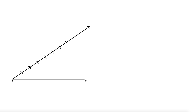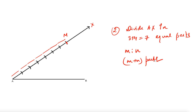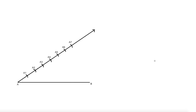Once I've marked 7 equal parts — 1, 2, 3, 4, 5, 6, 7 — I have seven divisions in line segment AM. So the second step is: divide AX into m+n equal parts (here 3+4=7). The third step is: name the points A1 to A7. It's simple and easy to understand.